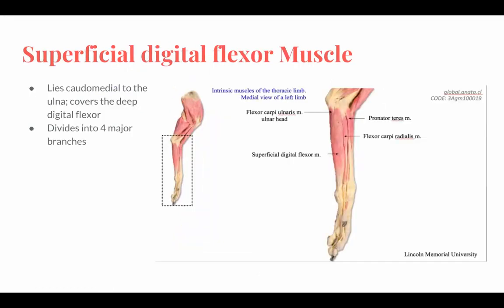Superficial digital flexor muscle. It lies caudomedial to the ulnar head and covers the deep digital flexor. It divides into four major branches, each inserting on one digit. It extends from the medial epicondyle of the humerus towards the palmar aspect of the middle phalanges of digits 2, 3, 4, and 5. Its function is to flex the carpal and digital joints.